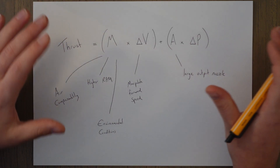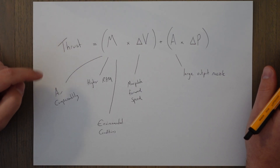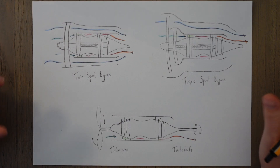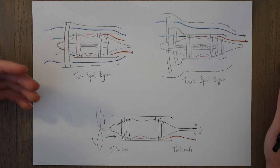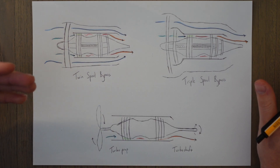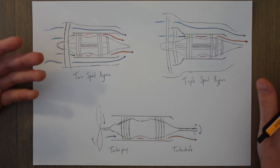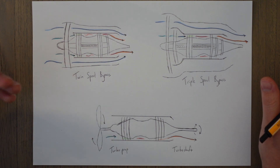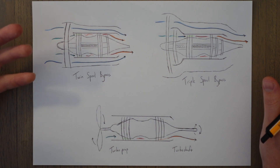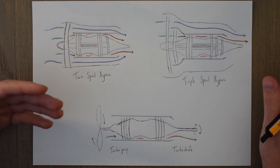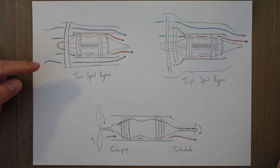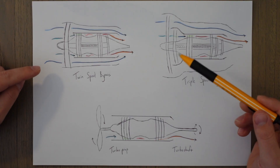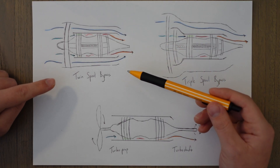So far we have looked at a basic single spool turbojet engine. There are a few different variants of jet engines though. The problem with this single spool design is that it isn't very efficient at low speeds, or even at the normal speeds that an airliner would fly at. So a variant using two different rotational spools was invented called the twin spool bypass engine.